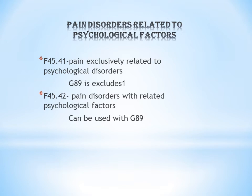In the second case, F45.42, G89 can be coded together with F45.42. That is, if the physical pain is of acute or chronic type and it is mentioned, then you can code G89 along with F45.42.